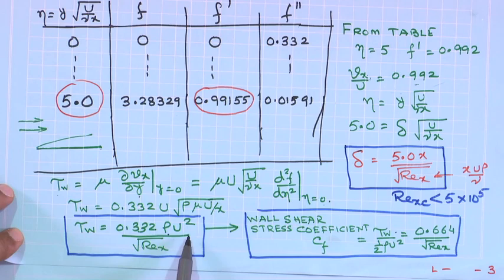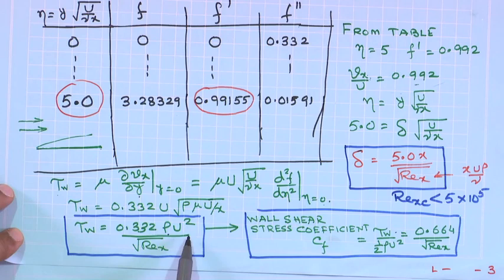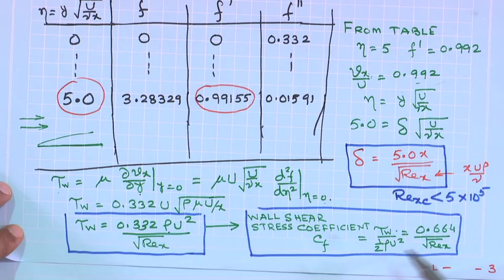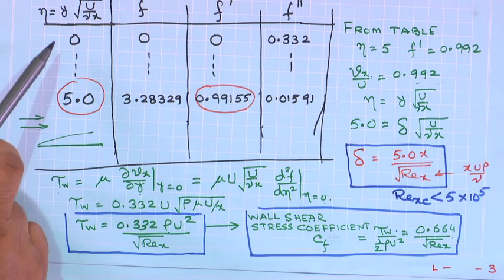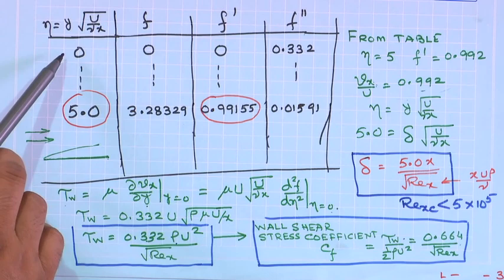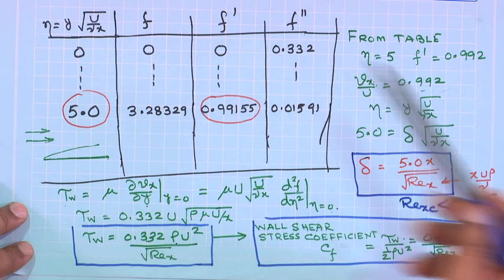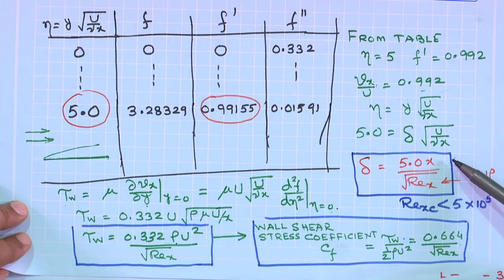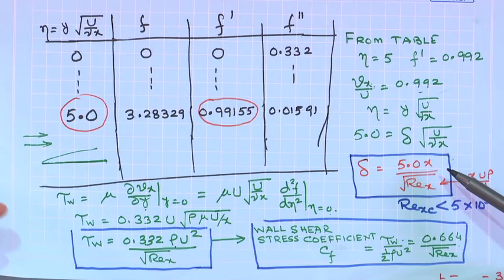For the wall shear stress, we obtained an expression for the wall shear stress coefficient C_f, which turned out to be 0.664/√Re_x. These two rows in the numerical solution were important, corresponding to η=0 which is the no-slip condition, from which we obtained the expression for wall shear stress and the thickness of the boundary layer.